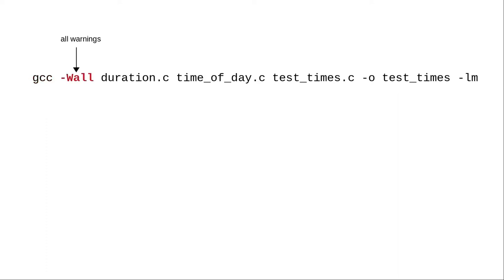Anything starting with a hyphen is a compiler option. The -Wall option means display warnings — the 'all' means exactly that: display any and all warnings that apply when compiling the program.